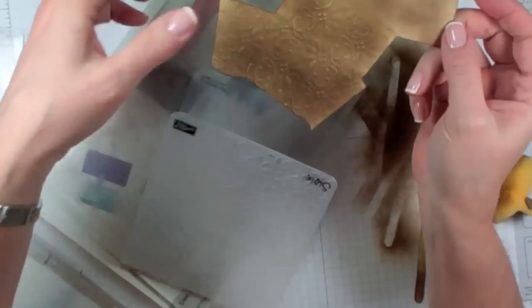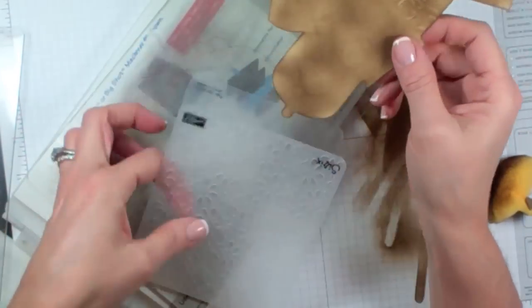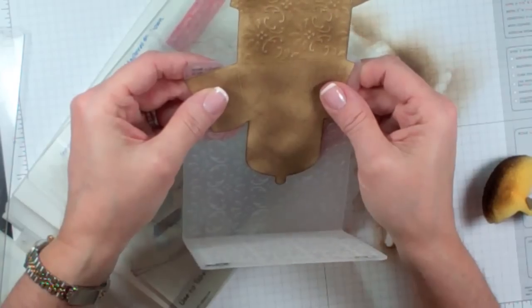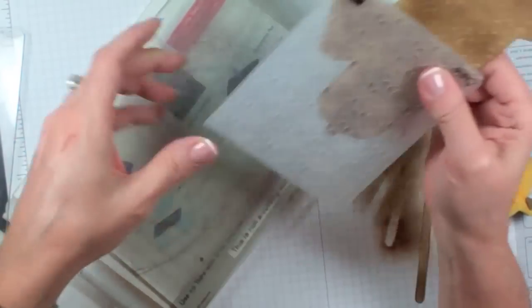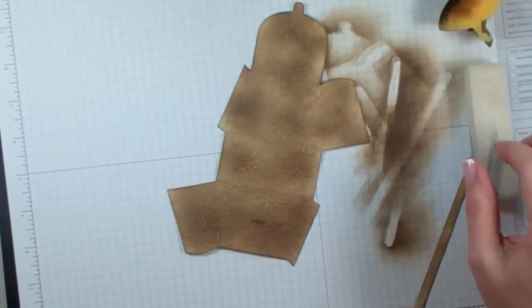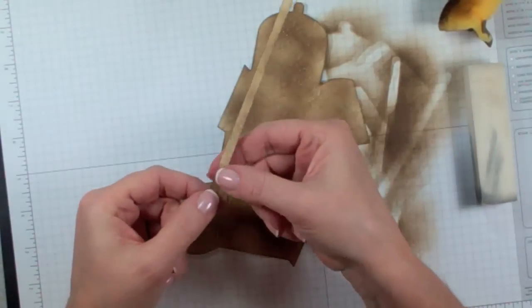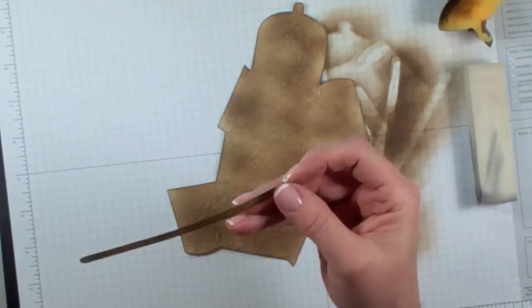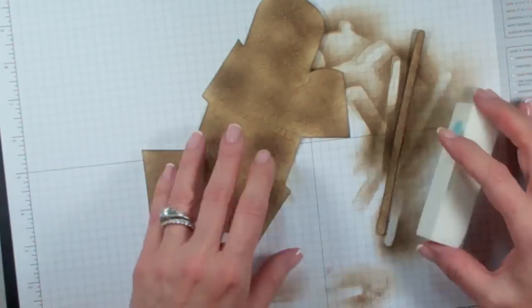Once you do that, it's going to give you the first half and then you're going to turn it around. Again, you're going to match up your seam and close it, put it back in and run it through again. You're then going to take the handle and do the same thing. Run that through the Big Shot. So now that that's done,